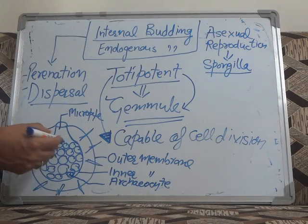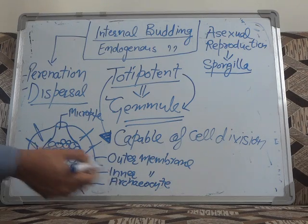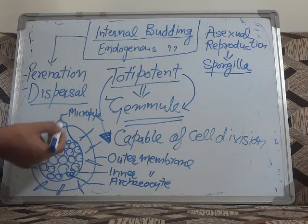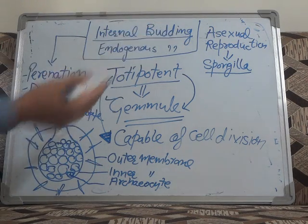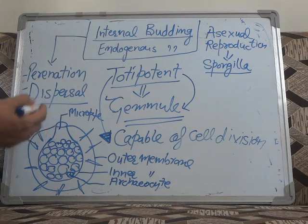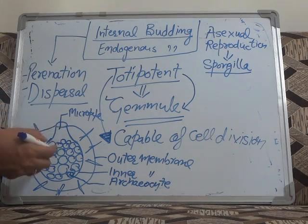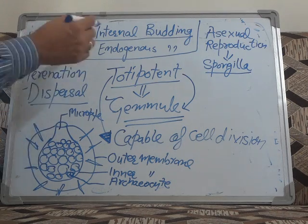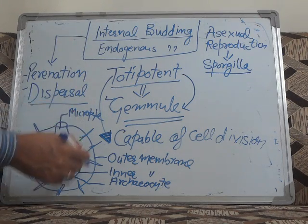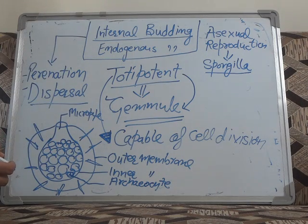These gemmules, on the onset of favorable conditions, release their totipotent cells — the Archeocytes — through the micropyle, and they will produce new Spongilla. This helps in the continuation of the species. This is an asexual method because buds are produced inside this structure, so it is known as endogenous or internal budding.